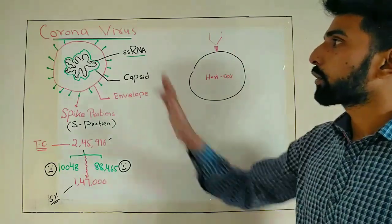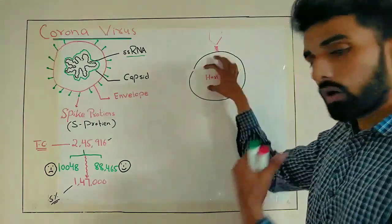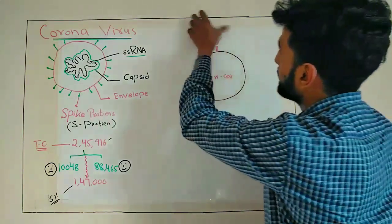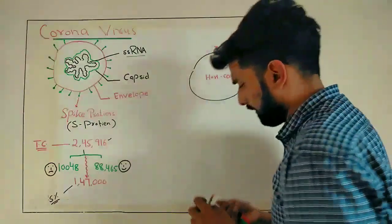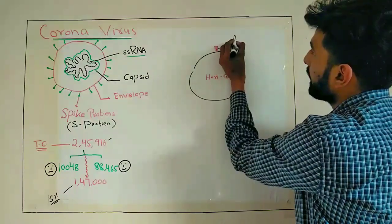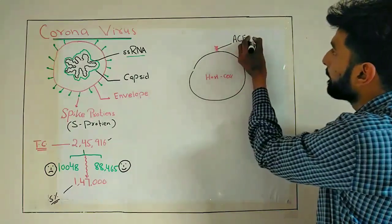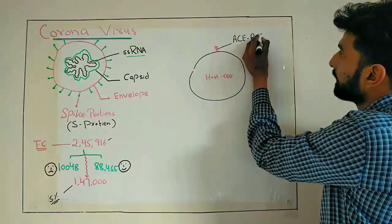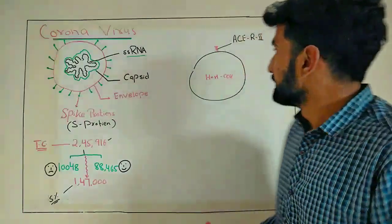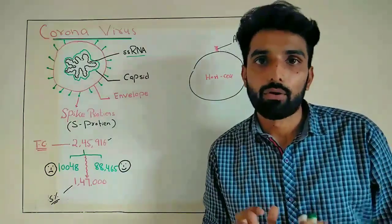And similarly, coronavirus also has a receptor on our body cells that it uses to get into our cell. The receptor name is, you must be very familiar with it, it is a very common receptor. The receptor name is angiotensin-converting enzyme receptor type 2. This receptor is basically used by this virus to get into our body.